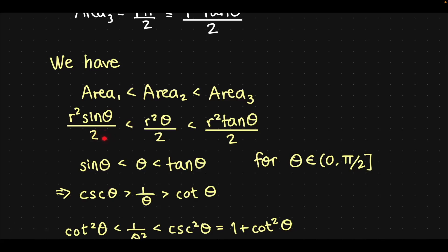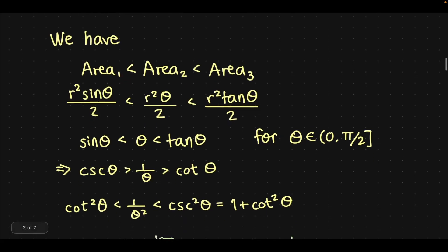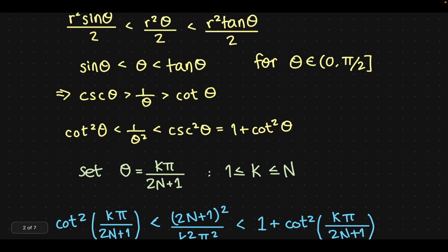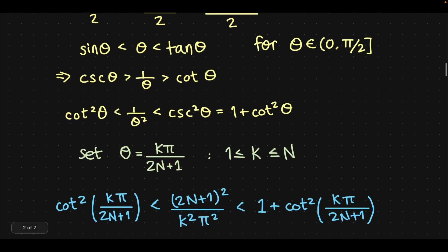We use a strict inequality because we're considering θ between 0 and π/2 exclusively — if 0 were included we'd get equality, which we need to avoid because in the next step we flip the inequality and get 1/θ, which wouldn't be possible if 0 were in the range. So we get: csc θ > 1/θ > cot θ. Squaring everything: cot²θ < 1/θ² < csc²θ = 1 + cot²θ. We then set θ = kπ/(2n+1), where k is an integer between 1 and n.